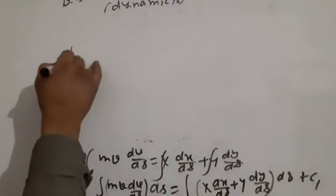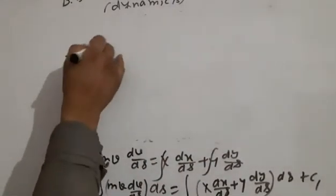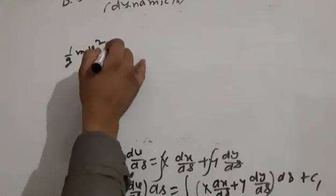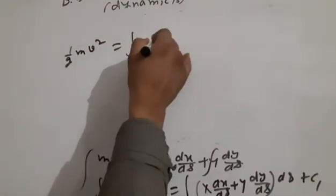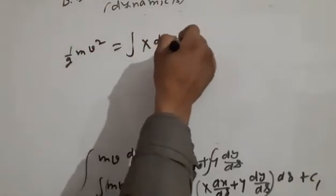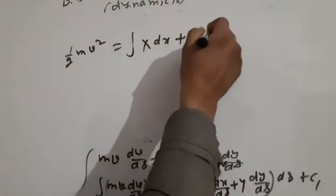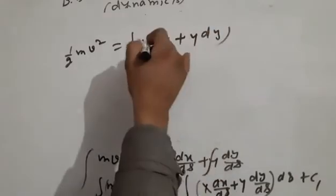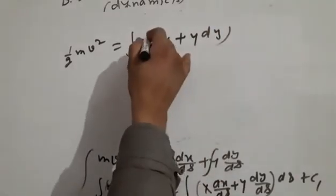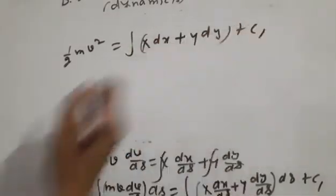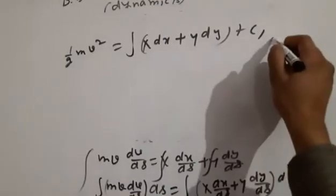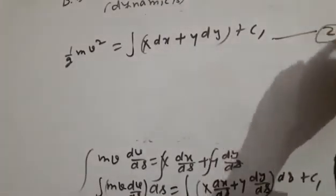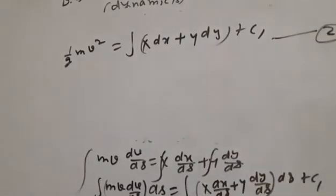This gives us: (1/2)·m·v² = ∫X·dx + ∫Y·dy + C₁. This is equation number 2.